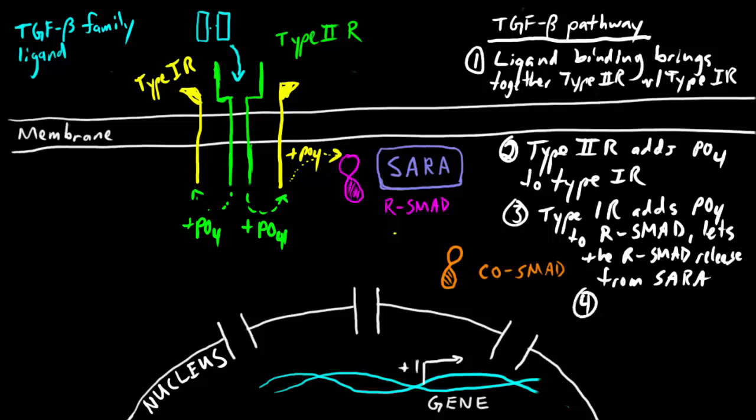After that happens, the RSMAD can now get together with a COSMAD and enter the nucleus. So you can think of the COSMAD in this case as the VIP pass that's going to actually allow the RSMADs to enter the nucleus. And they enter the nucleus through the structures called nuclear pore complexes. So basically pores, holes within the nuclear membrane that allow things to go in and out.